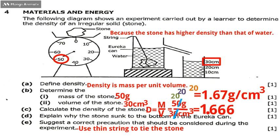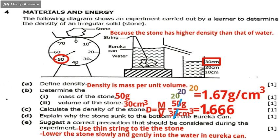Second precaution: lower the stone gently into the eureka can. Lower it slowly so that if you drop it suddenly, it will cause waves and water will come out unnecessarily. So those are the precautions you should take when carrying out this experiment.